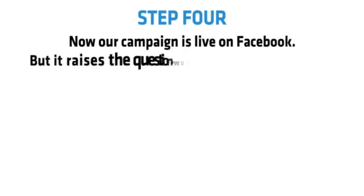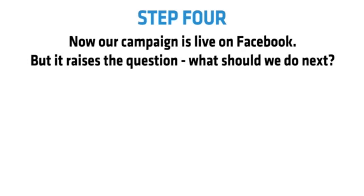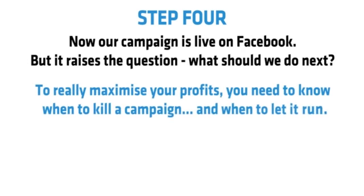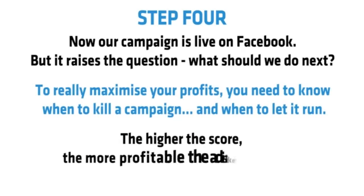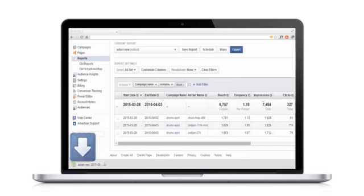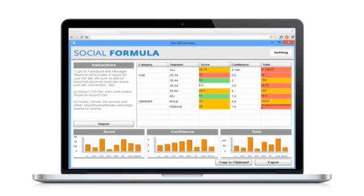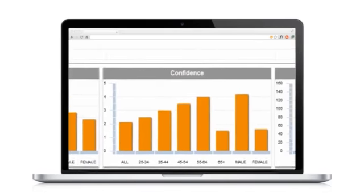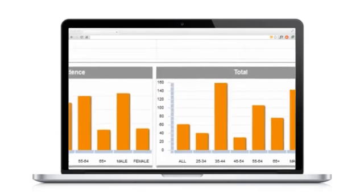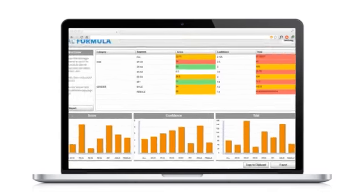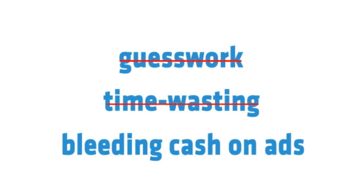Step 4. Now our campaign is live on Facebook, but it raises the question — what should we do next? To really maximise your profits, you need to know when to kill a campaign and when to let it run. That's why I've developed a software that lets you score any campaign out of 100. The higher the score, the more profitable the ad is likely to be. I call it the social formula tool and it makes managing ads a doddle. Just export a report from Facebook, import it into the software and it will tell you whether a campaign is a winner. It will even tell you if a particular age or gender segment is performing well. Predict the winners and identify profitable Facebook campaigns after only as little as $1 ad spend. No more guesswork, no more time-wasting, no more bleeding cash on ads because you don't know what to do next.